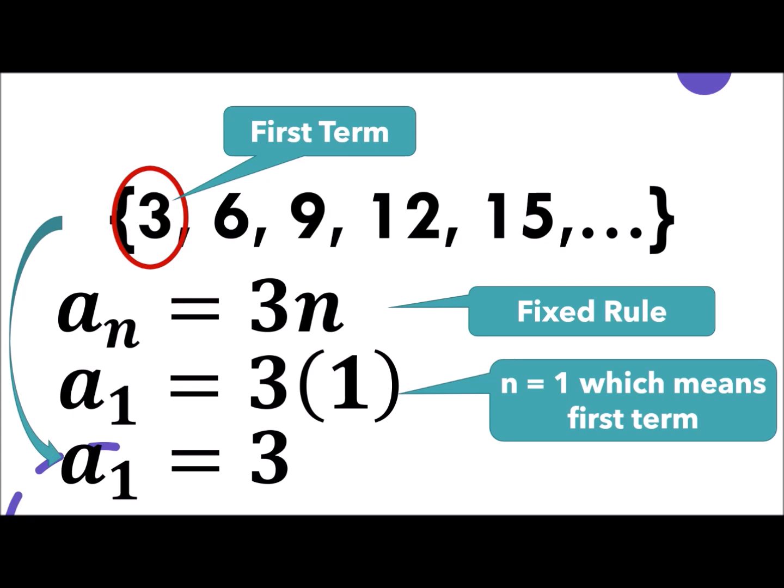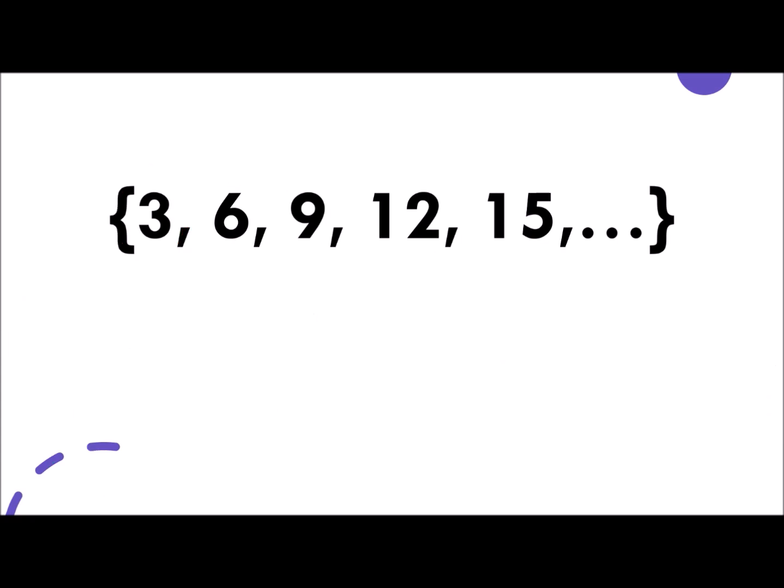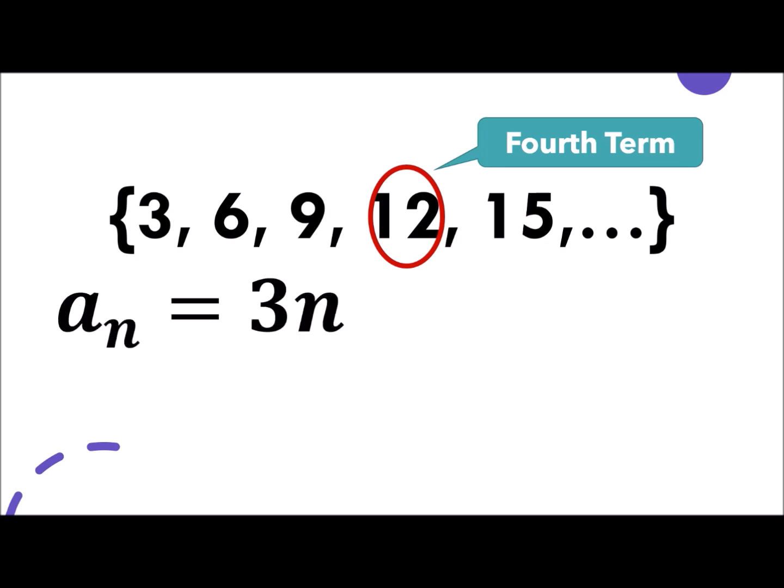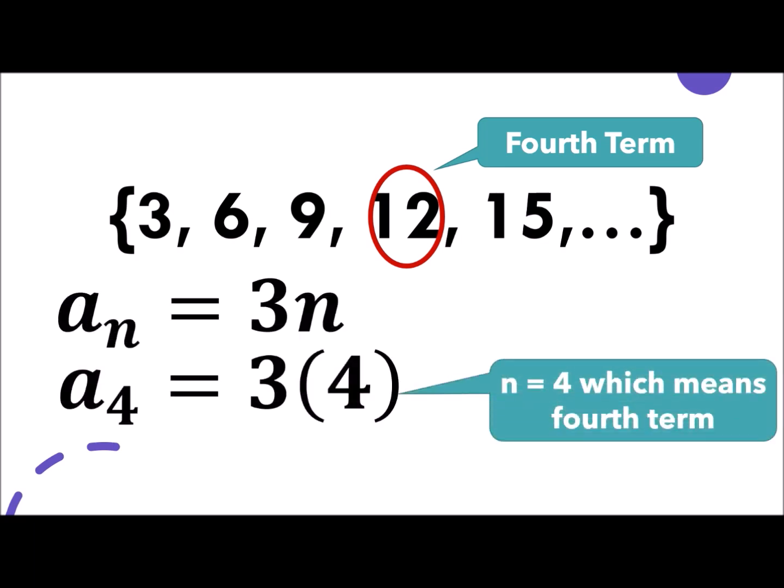Let's have another one. How about 12? That is the fourth term. So what do you think will be the value of n? Okay. So n now will become 4, which means fourth term. If we're going to substitute it on our general rule or the fixed rule, which is 3n, 3 times 4 is 12, which is very evident that that is the fourth term.